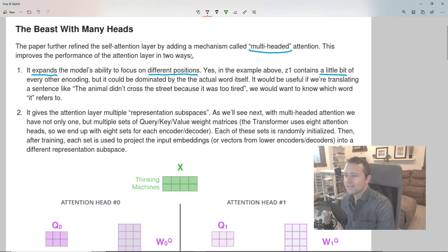So yes, Z1 is a linear combination of all of the value vectors for every word in the sentence. So it does include a little bit of every other word. But it could be dominated by the actual word itself. Now, Jay said something to this effect earlier. Yeah, he was saying that when computing the score, he said something like, obviously, the score for the input word itself is going to be the highest score. And I still don't know why that should be the case.